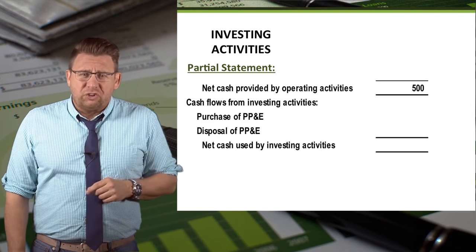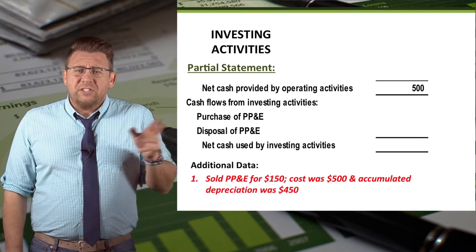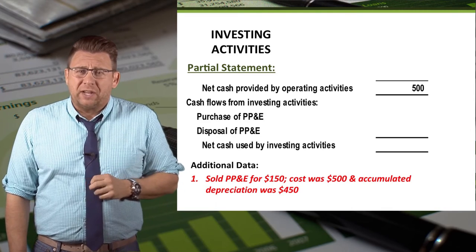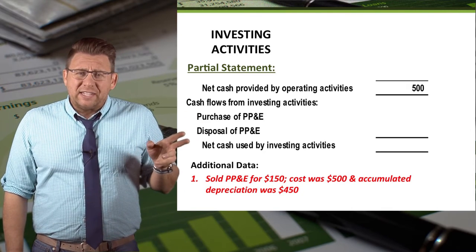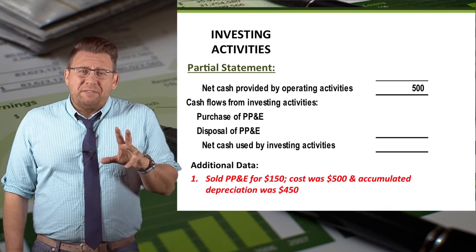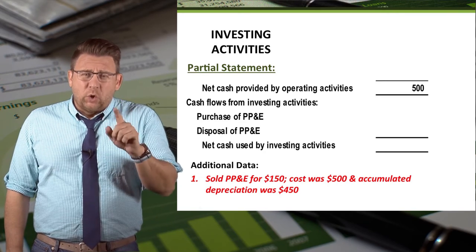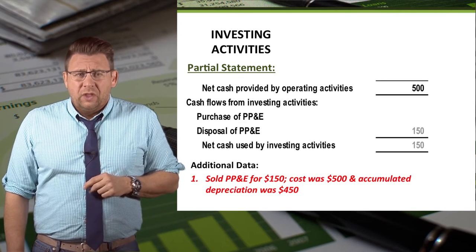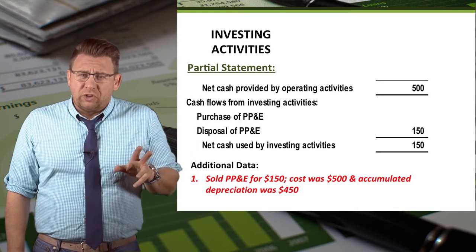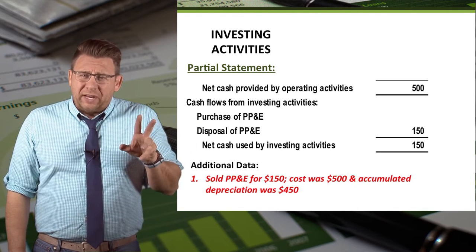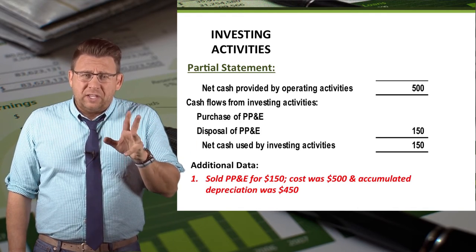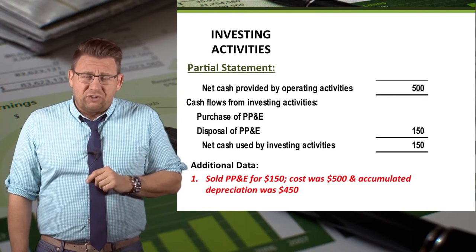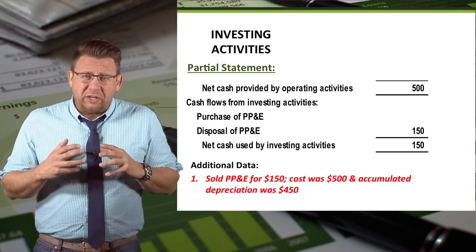Now let's look back at the additional data. The first item I've identified is some information about the sale of Property, Plant, and Equipment. In this case, we are given a lot of information, but we really only need the cash amount. So the sale and disposal of Property, Plant, and Equipment for $150 is added in the Investing Activities section, because cash is being received.